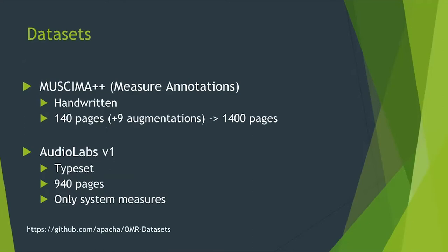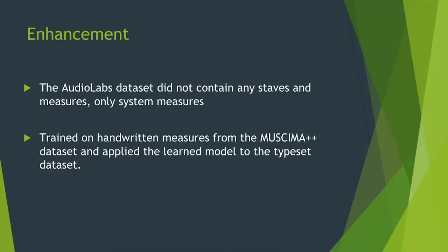MUSCIMA++ has handwritten music with 140 pages and nine augmentations, which takes it up to 1,400 pages. AudioLabs is typeset with 940 pages, but unfortunately it only has system measures. We had to enhance the existing datasets with the other two categories of measures.